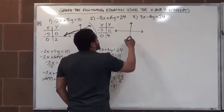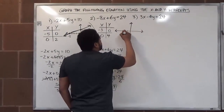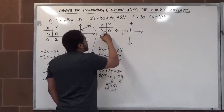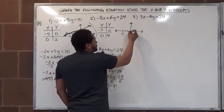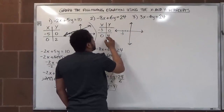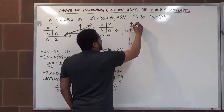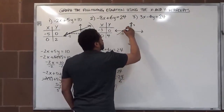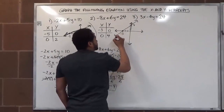Now we plot these points. Our x intercept is negative three, zero, so we go three left from the origin. Our y intercept is four, so we go up from the origin — one, two, three, four. Here's four and here's negative three. We draw a straight line through the two points. That's what the graph of the equation looks like.